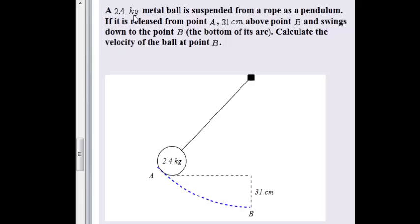A 2.4 kg metal ball is suspended from a rope as a pendulum. If it is released from point A, that is 31 cm above point B, and swings down to point B, the bottom of the arc, calculate the velocity of the ball at point B.